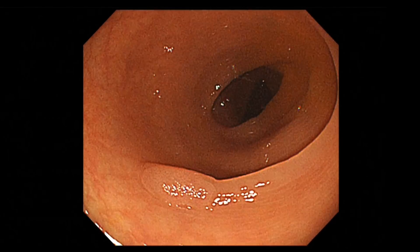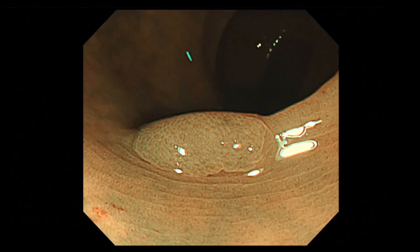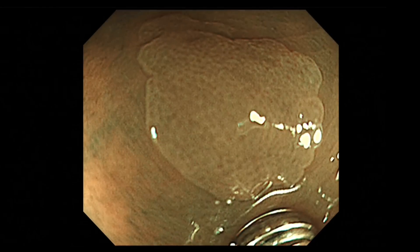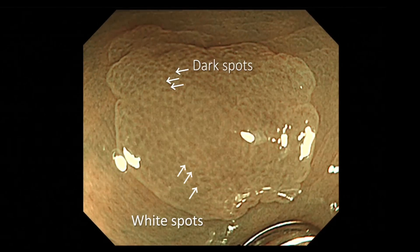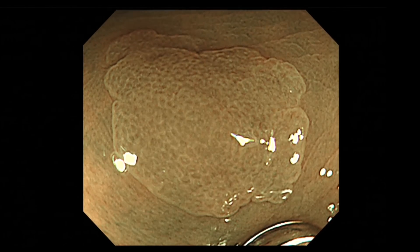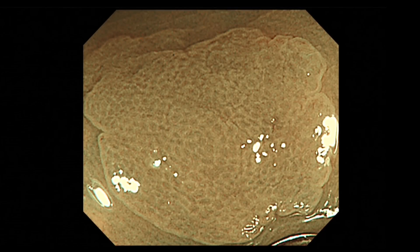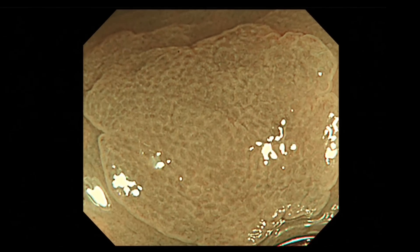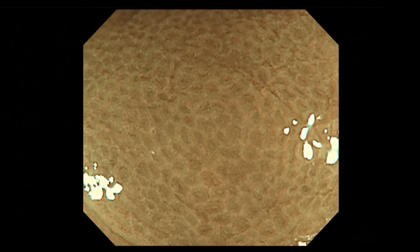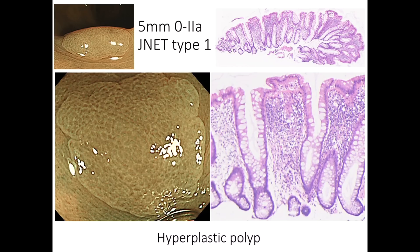Here we have a slightly elevated polyp 5 mm in diameter. We cannot see any vessel structures on this polyp. Both regular white spots and dark spots are observable, and the surface structure has no specific features — the pattern is similar to the surrounding normal mucosa. Therefore, this lesion is classified as J-Net Type 1. This polyp was resected by snare polypectomy. The histopathological images show serrated glands without any dysplastic change, so it is diagnosed as hyperplastic polyp.